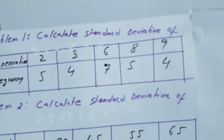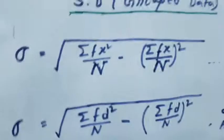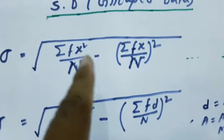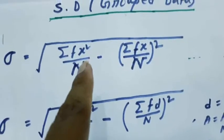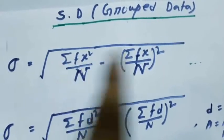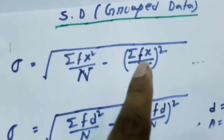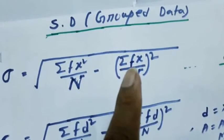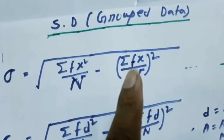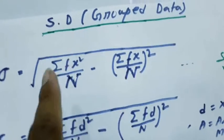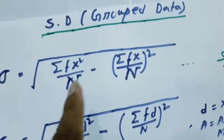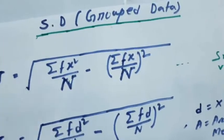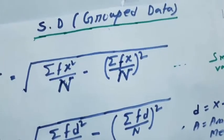What is the demand of the formula? It requires f x square and f x. We have to get the value of f x and f x square. N is the sum of frequency.